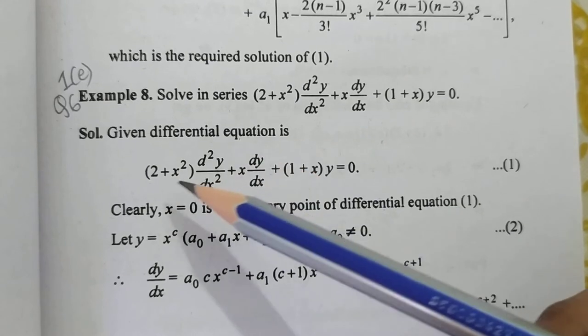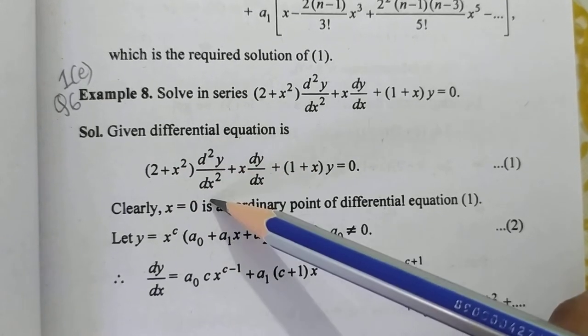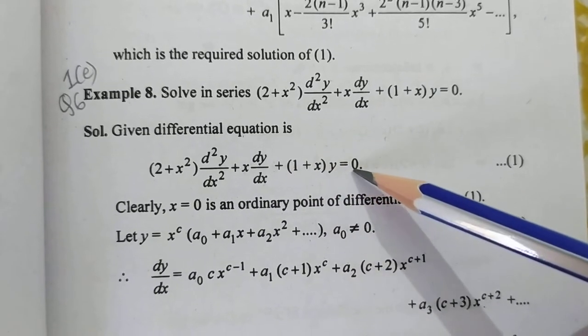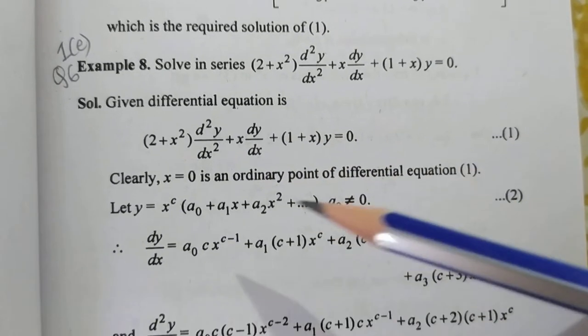Given differential equation is (2 + x²)d²y/dx² + x dy/dx + (1 + x)y = 0. This is equation 1.